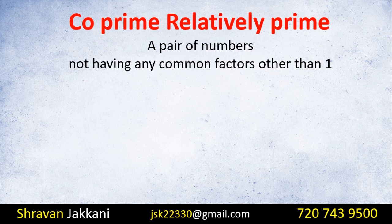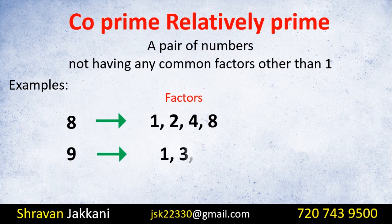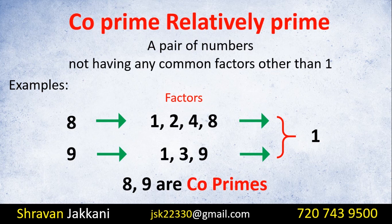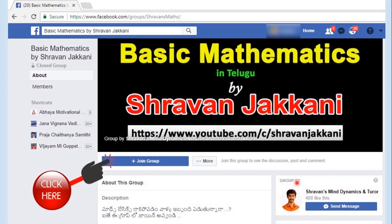So in this video, the common factor of 2 is the common factor of the factors. So one factor looks like one factor. If you have one factor in your number one, you would choose number one factor for the common factor. These are the factors in your categories. This is today's topic. If you are interested in the notes, you can send a message to our WhatsApp number and find the links in the description. You will find Basic Mathematics in Telugu by Stravan Jackani in the Facebook group.